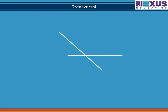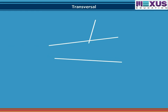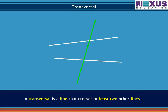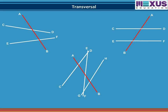We know that when two lines intersect, they are called intersecting lines. But if a line cuts two different lines at distinct points, then this line is called a transversal of those two lines. That is, a transversal is a line that crosses at least two other lines. In this figure, we see that line AB is the transversal as it passes through more than one different line.